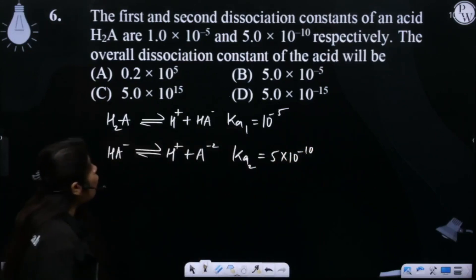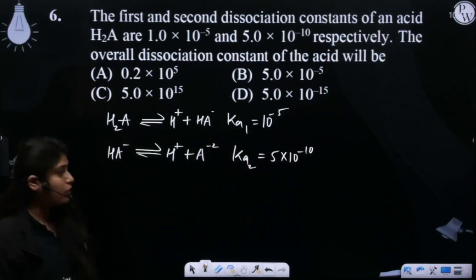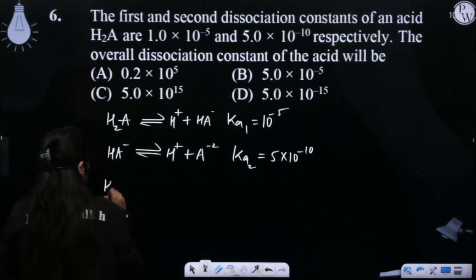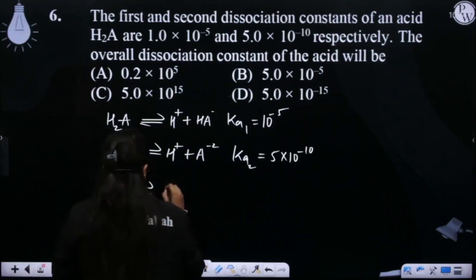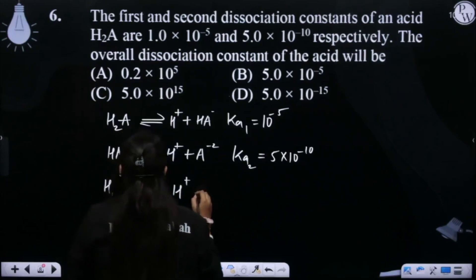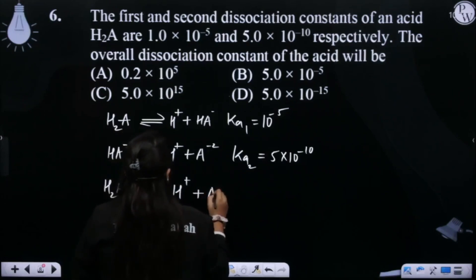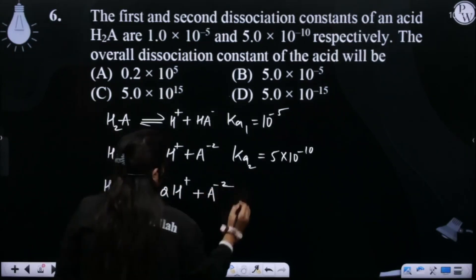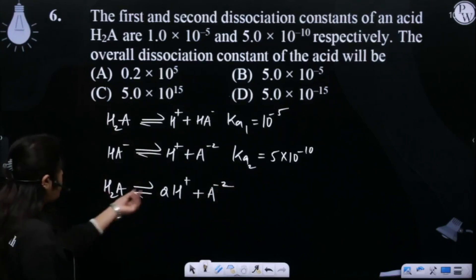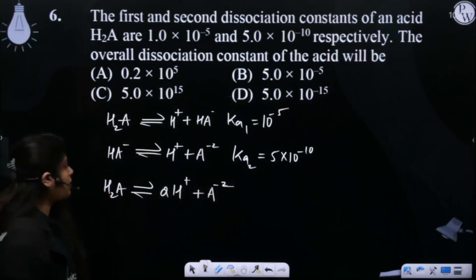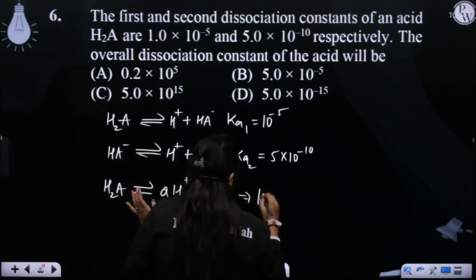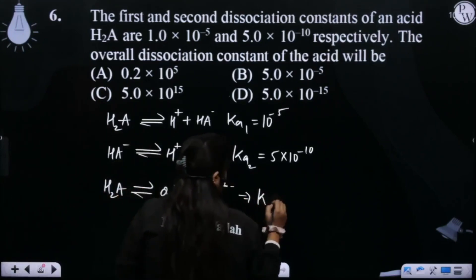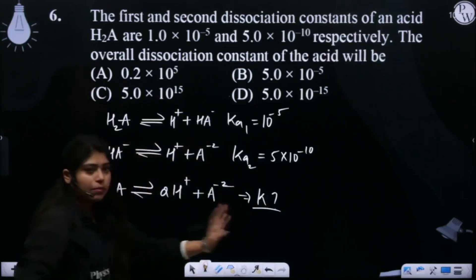What is asked is the overall dissociation constant of the acid. When we write the overall dissociation, we write it as H₂A gives 2H⁺ and A²⁻. We need to calculate the dissociation constant of this overall step.